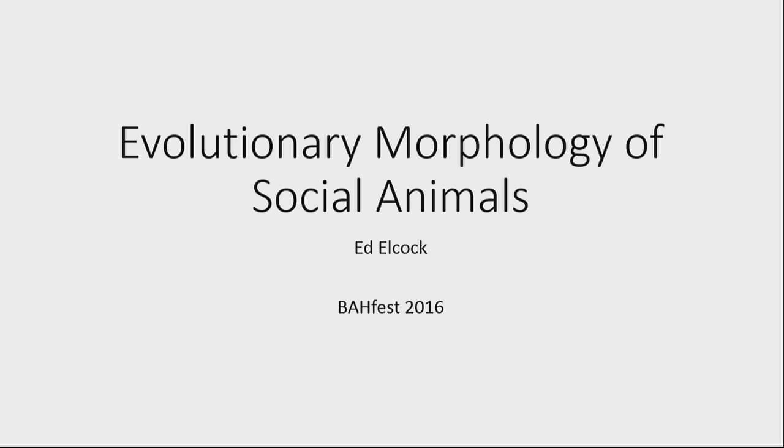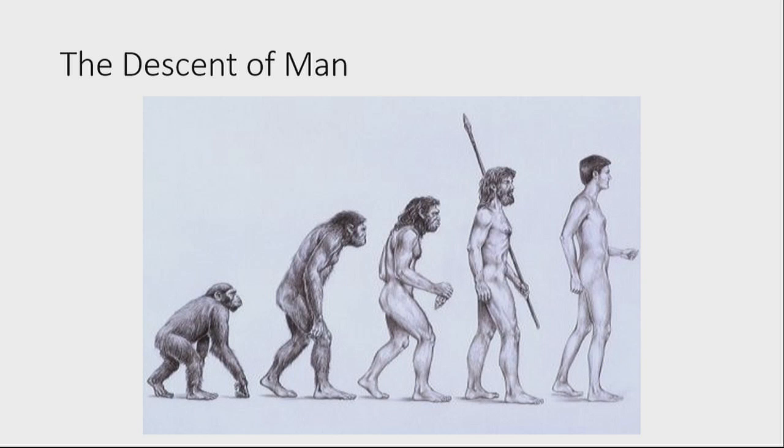My talk is on the evolutionary morphology of social animals — how animals that live in groups have changed their shapes over time in response to selection pressures. We're going to start with the descent of man, which shows how early hominids gradually became more upright over time until we see the fully upright modern human. The popular explanation was that it freed up our hands to facilitate tool use. We propose an alternative hypothesis — one we feel has broader explanatory power — that humans became more upright in order to optimize our packing efficiency.